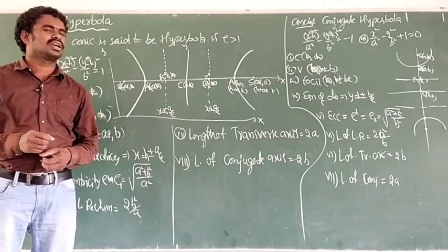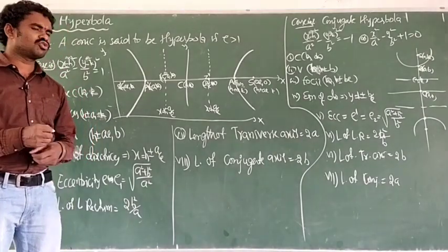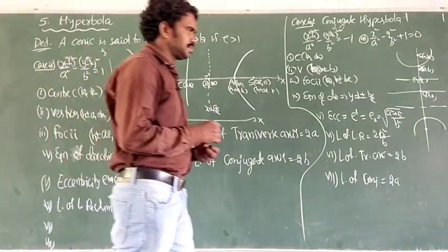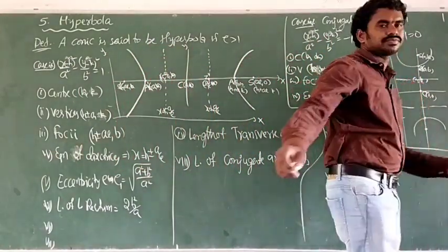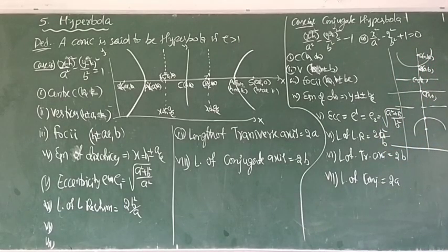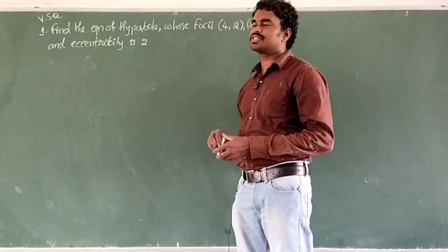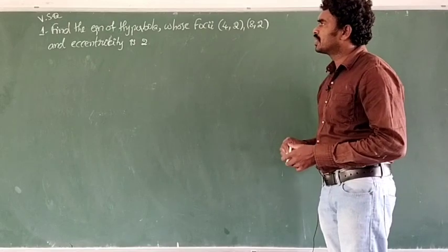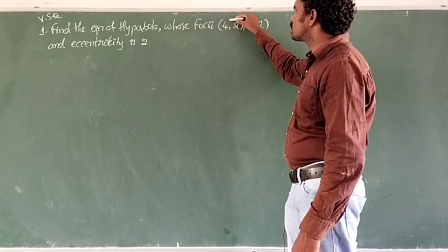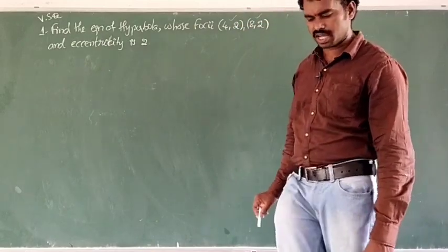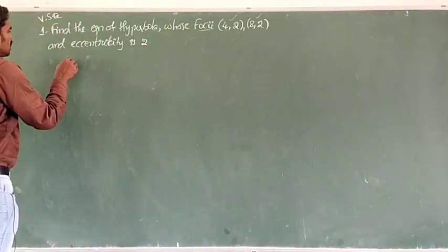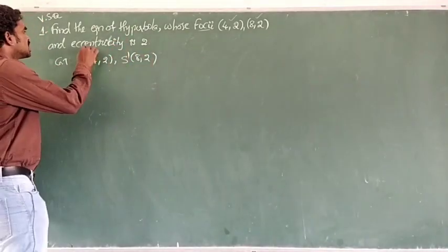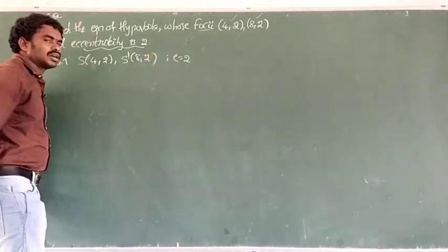Now let's look at the 2-mark questions. First question: Find the equation of the hyperbola whose foci are (4,2) and (8,2) and eccentricity is 2. Here, one focus S = (4,2), another focus S dash = (8,2), and eccentricity E = 2. We need to find the hyperbola equation.